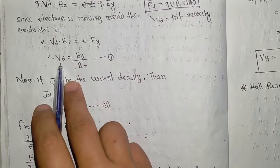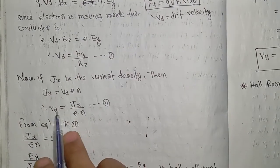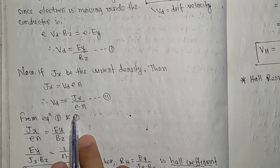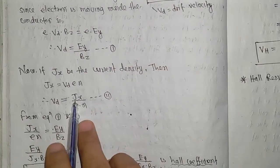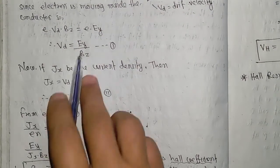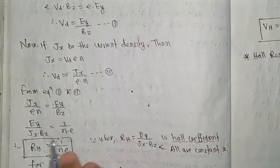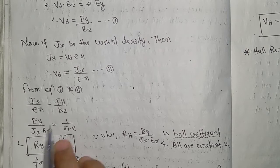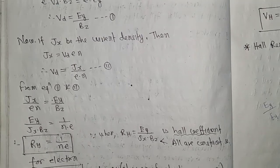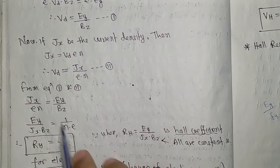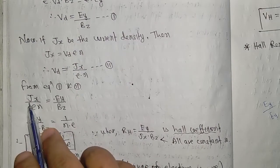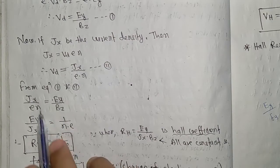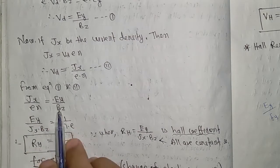From equations one and two, we get EY = VD·Bz = (Jx/nε)·Bz. Therefore, EY = (Jx·Bz)/(nε), which equals (1/nε)·Jx·Bz.